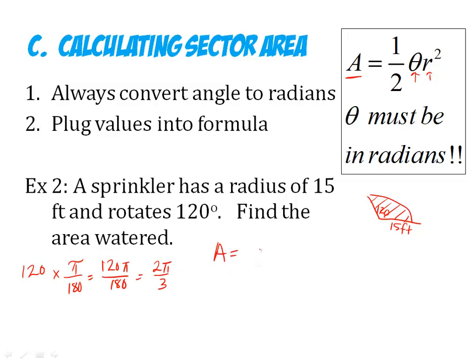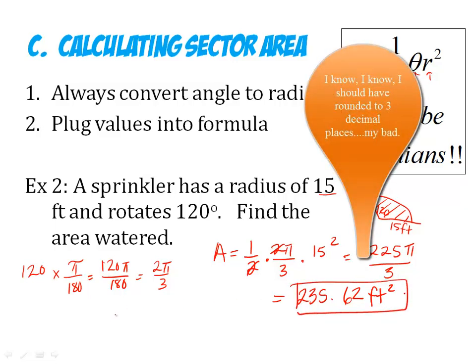Now I can plug into the formula. 1 half times theta times my radius squared. Well, the radius is 15. So the 2's will cancel here. 15 squared, when you get your calculators, is 225, pi is still on top, divided by 3. And so then I would type this in the calculator using the pi button and find out exactly what that is. So it would be 235.62 feet squared. Remember, it's area, so it's going to be a squared unit. So always make sure you square your unit.